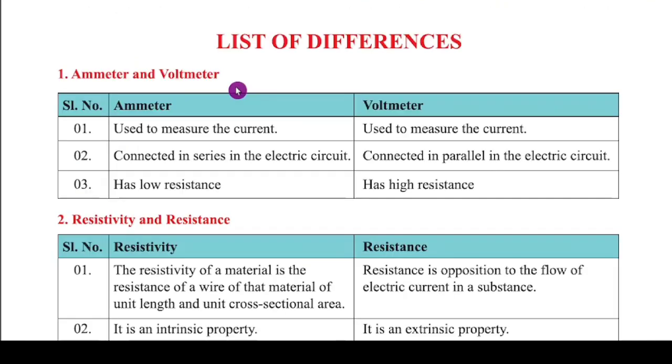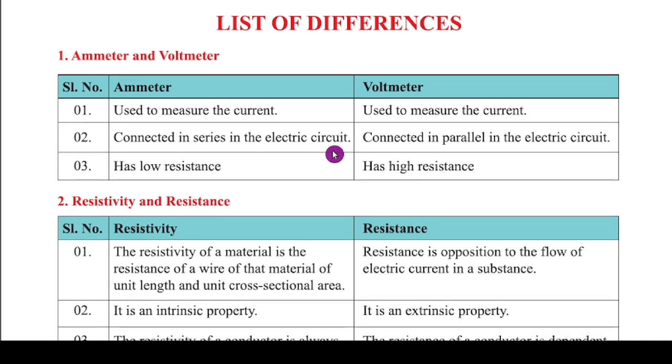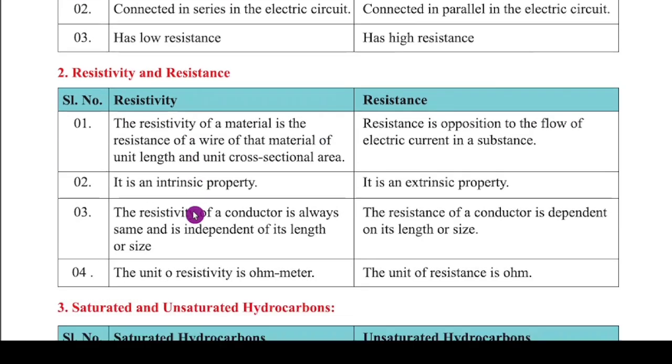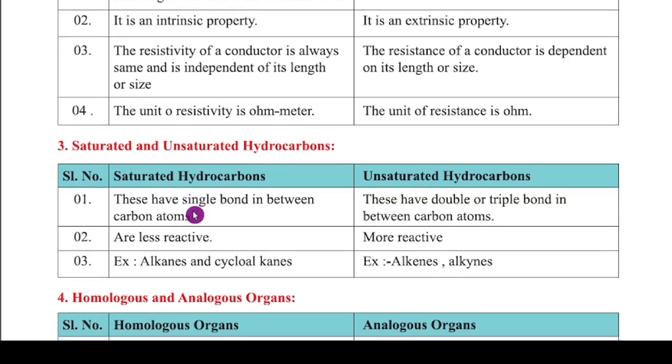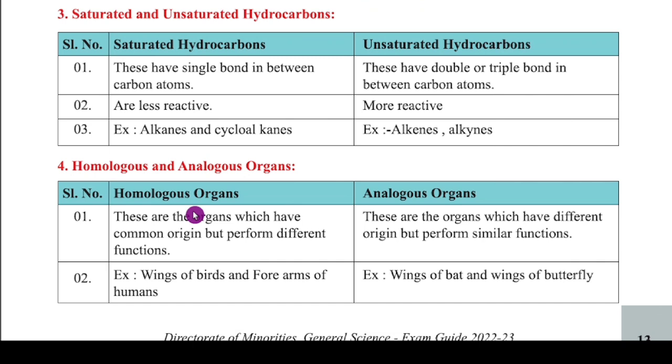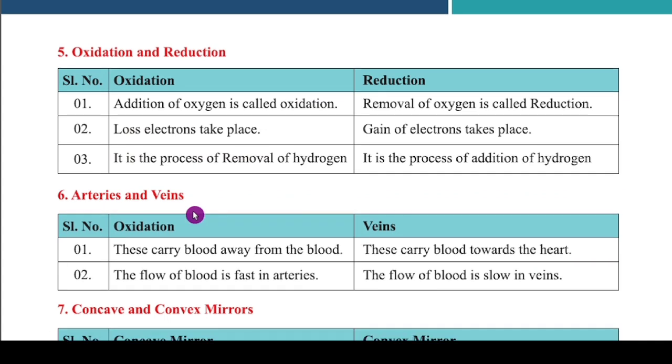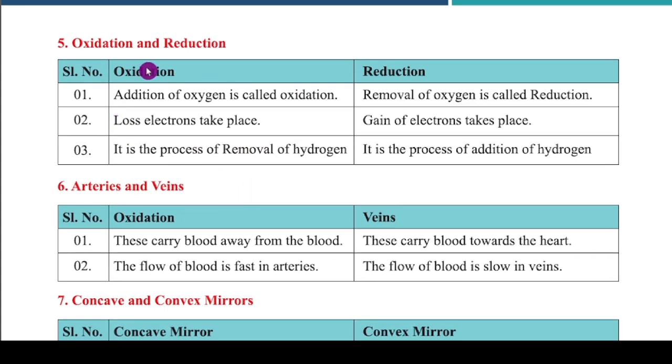Next is the list of differences. We know that many differences are there. Differences between ammeter and voltmeter. And next one is saturated and unsaturated hydrocarbon. Even last year, they asked this question also. And next one is homologous and analogous organs. And based on that concept in the biology, they will ask one or one to two marks questions. So don't forget.